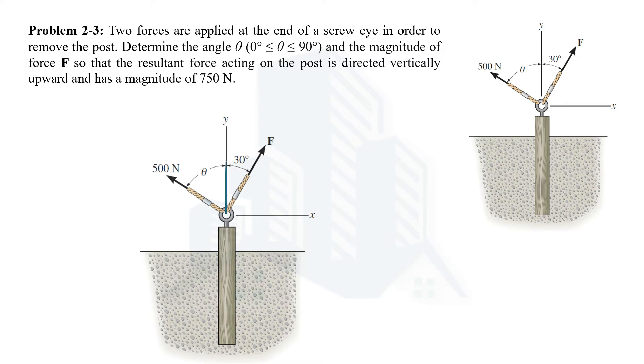There is a third force which is the resultant of these two forces, which is given and is acting exactly upward along the y-axis with a magnitude of 750 Newton. Now we have to determine the magnitude of force F and the angle which the 500 Newton force is making with the y-axis.